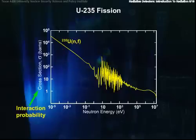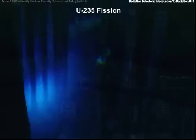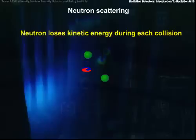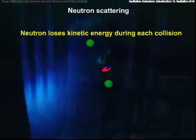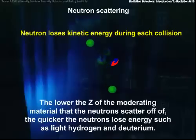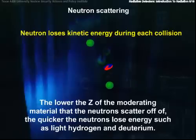How do we slow neutrons down? The answer is, we let them scatter off things. This is a Faustian bargain, because each time a neutron bangs into something, it could also be absorbed and lost out of the chain reaction. This is what nuclear engineers do — we rig the game so that we can slow down, but not lose, very many neutrons. It turns out that the lower the Z of the moderating material that the neutrons scatter off, the quicker neutrons lose energy. Light hydrogen and deuterium are among the best moderating materials.